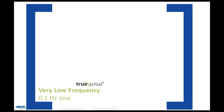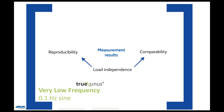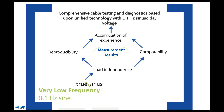Despite the advantages and disadvantages of each of the different testing and diagnostic methods — such as 50 Hz sinusoidal, 0.1 Hz sinusoidal, DAC, and 0.1 Hz cosine square wave — the 0.1 Hz voltage shape has the decisive advantage of reproducible and comparable measurement results. This is due to its load independence, which can only be achieved by the true sinusoidal 0.1 Hz voltage. Thanks to the comparability of the measurement results, the operator can build up empirical and reference values in the field of dissipation factor measurement and partial discharge testing. This comparability massively increases the benefits of cable diagnostics. A further advantage is that the sinusoidal 0.1 Hz technology can be used for all meaningful measurement methods, such as dissipation factor measurement and partial discharge testing.